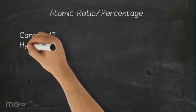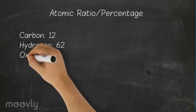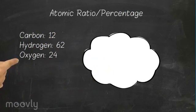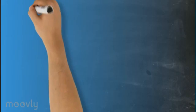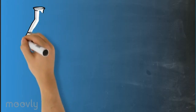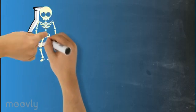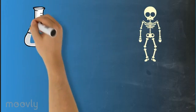The atomic ratio of carbon, hydrogen, and oxygen are present on the screen. These ratios represent the average adult human body: 24% of the atoms in the body are oxygen, 12% carbon, and 62% hydrogen.